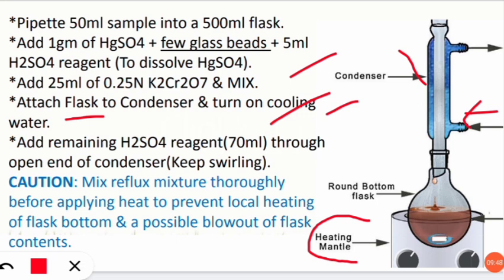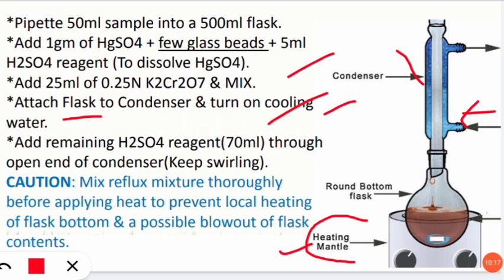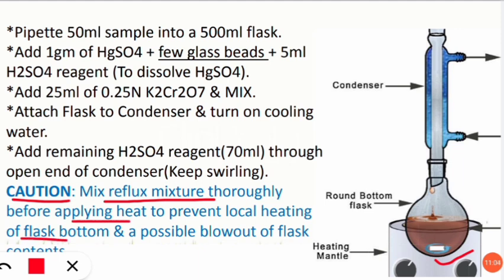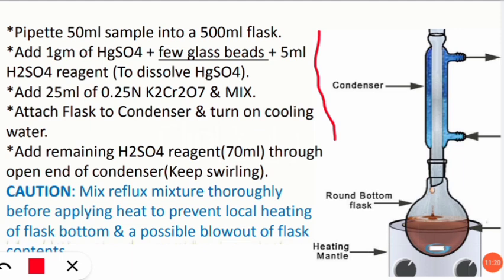All previous steps were carried out before attaching the flask to the heating mantle. Now attach the flask with the condenser and turn on the cooling water through the inlet. Do not start the heating mantle yet. Add the remaining H₂SO₄ reagent — approximately 70 ml — through the open end of the condenser. Then keep swirling the mixture using the stirring knob.